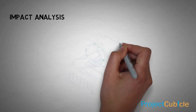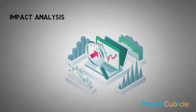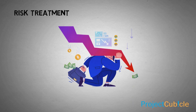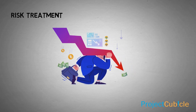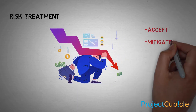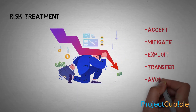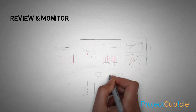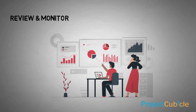The next step is to consider the potential impacts of the identified risks. Risk treatment can be performed in many different ways depending on your industry or process. The strategies to deal with identified risks include: accept, mitigate, exploit, transfer, and avoid. As the project progresses, it is essential to keep risk logs updated, as some risks will disappear while others might increase in likelihood.